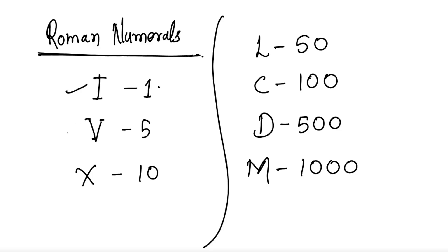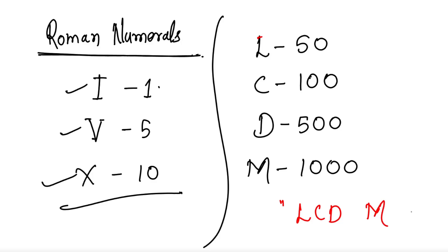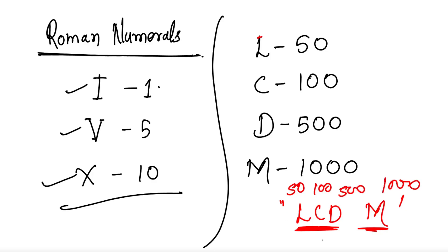You know I for one, V for five, and X for ten. Then next, there may be some jumping — like C for hundred or M for thousand. So just remember LCD — L means 50, C means 100, D means 500, and M means thousand.